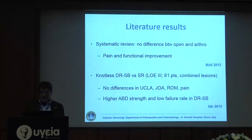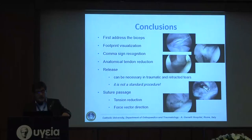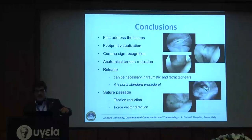In conclusion, the crucial steps for subscapularis repair are: first, address the biceps pathology using tenotomy or tenodesis according to your preference. Footprint visualization is critical. Comma-sign recognition allows anatomical reduction and repair of the tendon. Release whatever is necessary to achieve complete reduction of the tendon over the footprint on the lateral side of the lesser tuberosity. Suture passage is another crucial point to reduce tension, minimize the risk of fiber laceration, and respect force-vector direction during knot tying. Thank you very much.